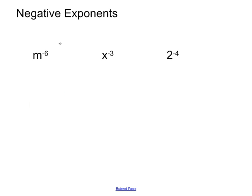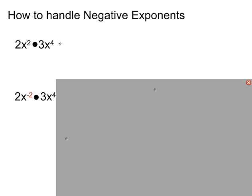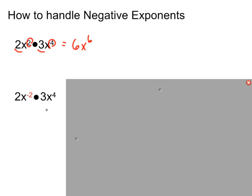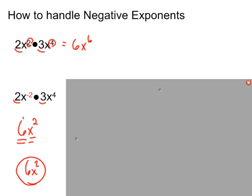Let's apply this to what we already know. We multiply the coefficients: 2 times 3 is 6. We add the exponents — negative 2 plus 4 gives positive 2, so that's x squared. We just add and subtract the way we always have. Then ask: is the 6 happy? Yes. Is the x squared happy? Yes. So 6x squared is your final answer — there's nothing else to do.